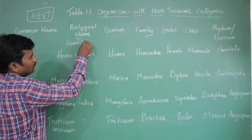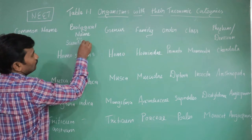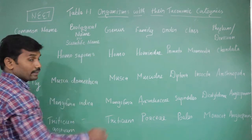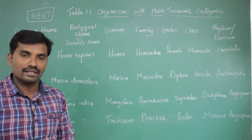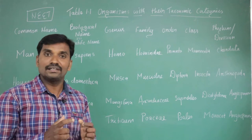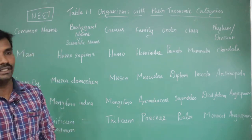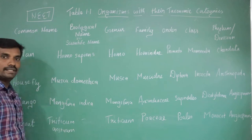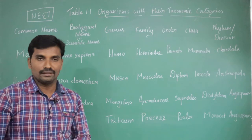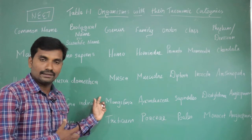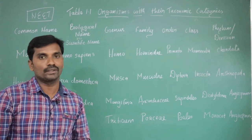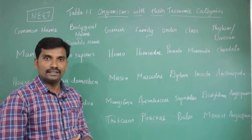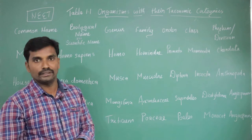Species also has a biological name, also called the scientific name. We need to follow the International Code of Botanical Nomenclature — ICBN. If botanical names are there, we follow botanical nomenclature. In case it is a zoological name, we use the International Code of Zoological Nomenclature.